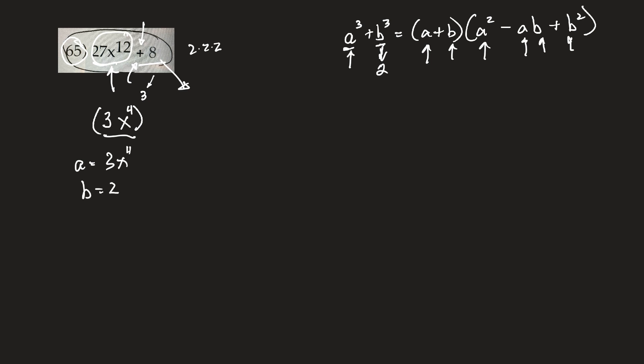Let's try it. You don't really have to do it to this side, but I guess you could. So 3x to the 4th cubed plus 2 cubed is equal to... Okay, a, 3x to the 4th plus b, 2, done.